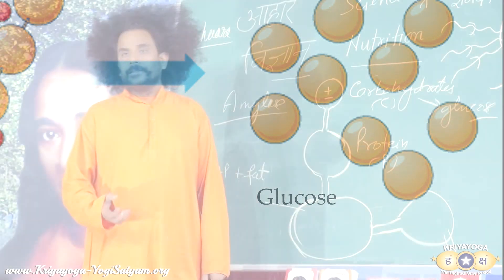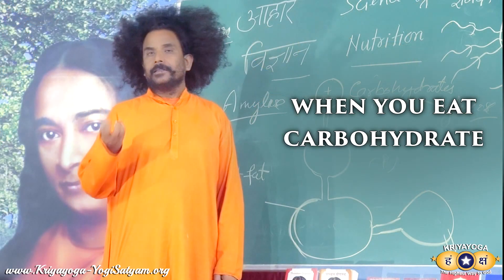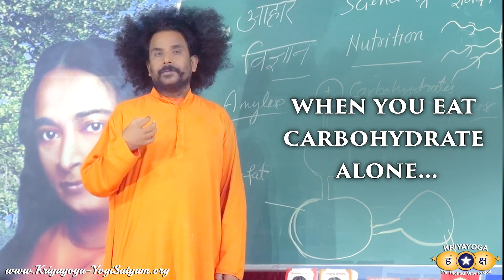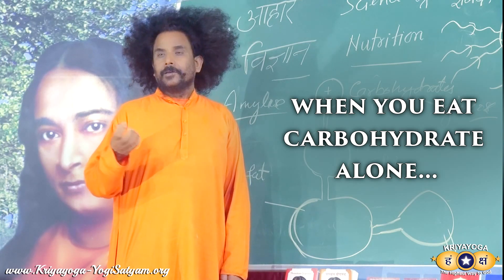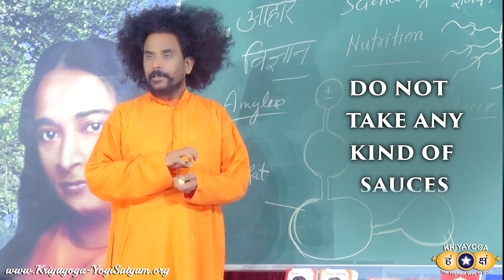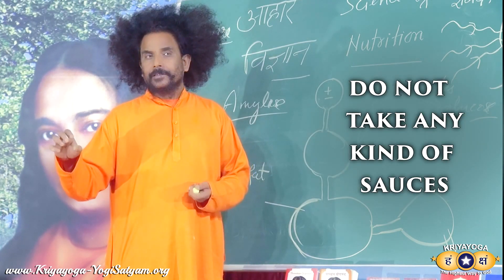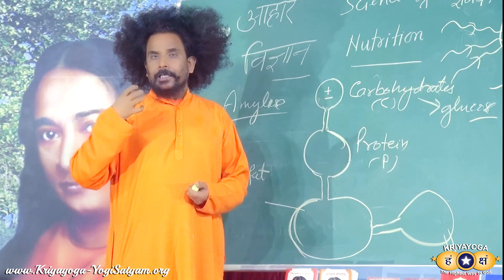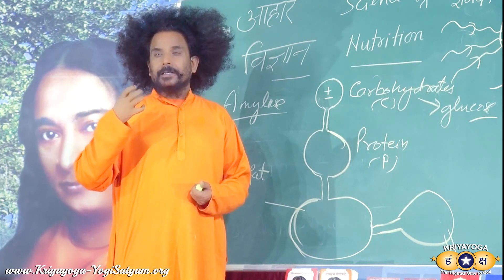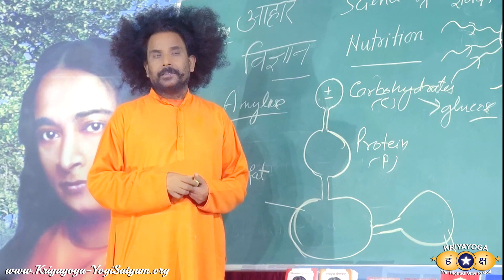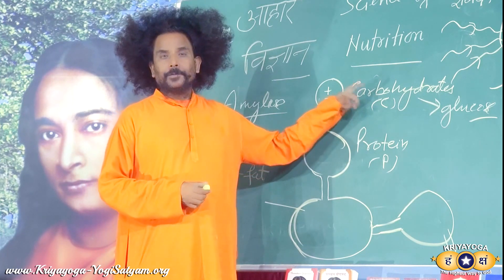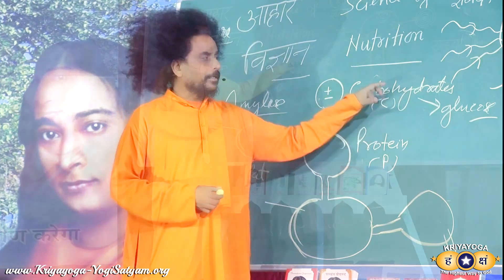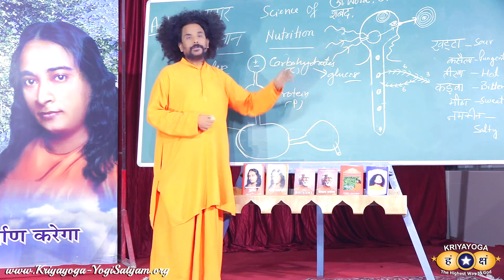Amylase works on carbohydrate and converts it into glucose. Therefore, when you eat rice alone, roti alone, or corn alone — without any sour food — after some time when you chew, you will find a mild sweet taste. That is the transformation of carbohydrate into glucose happening right in your mouth.